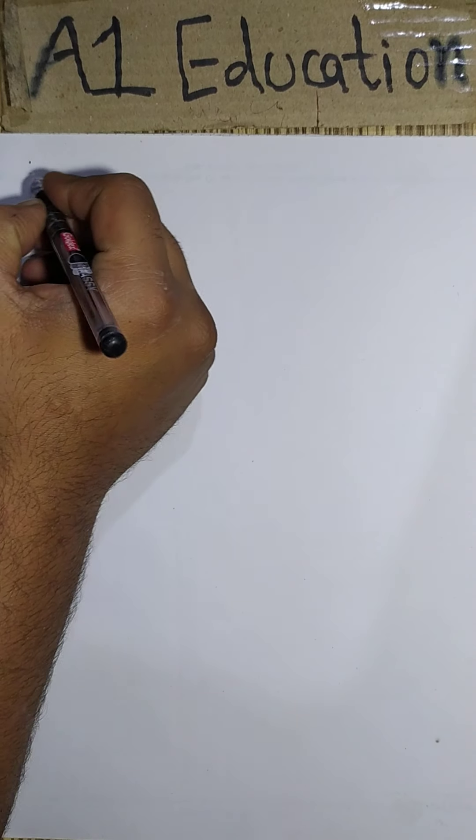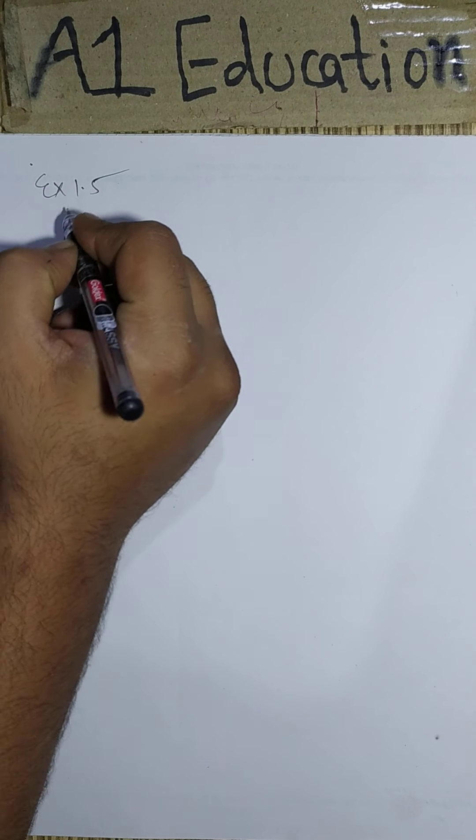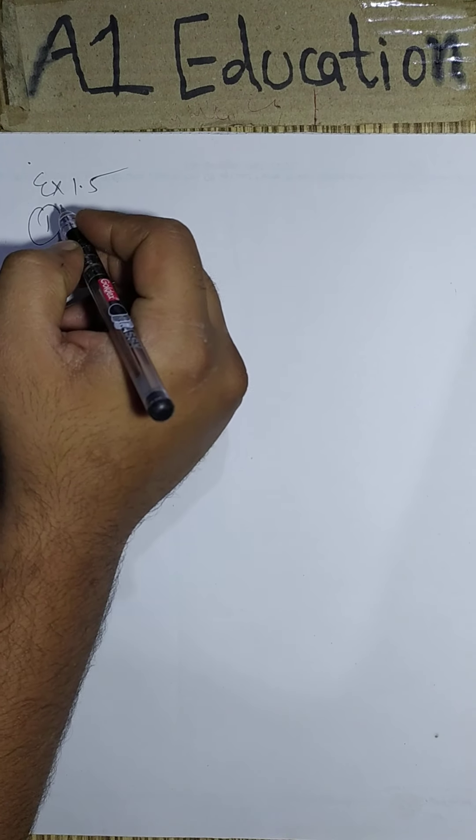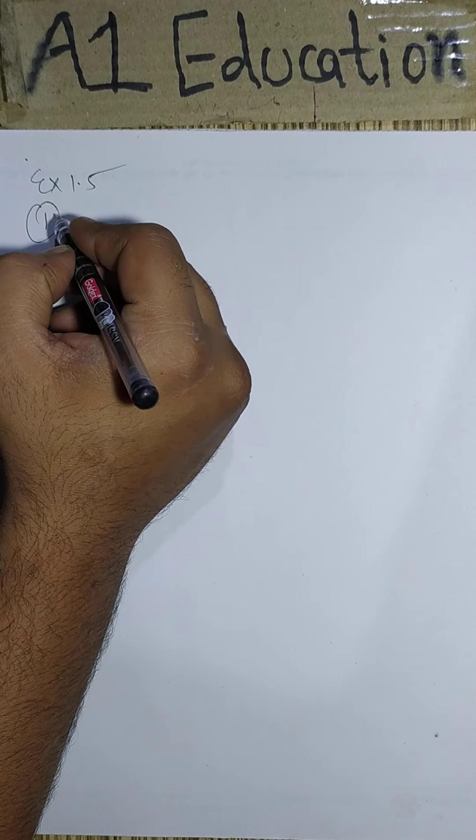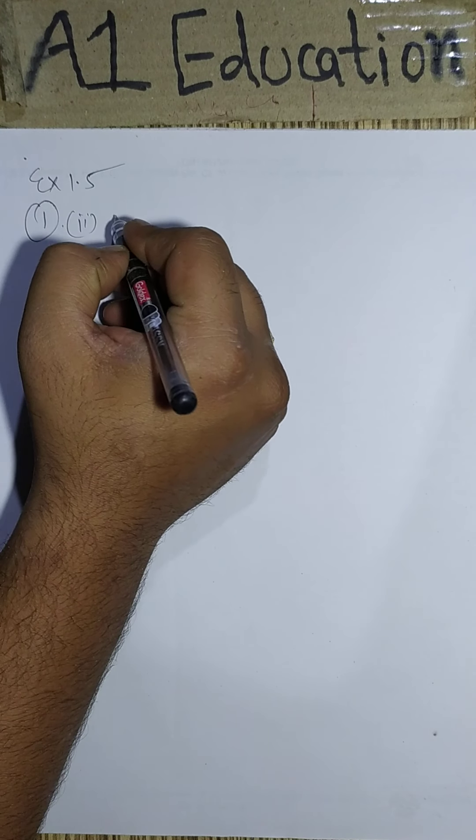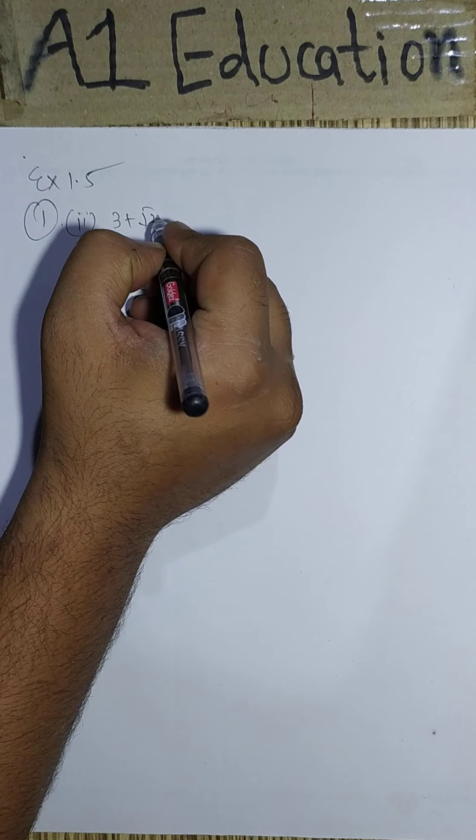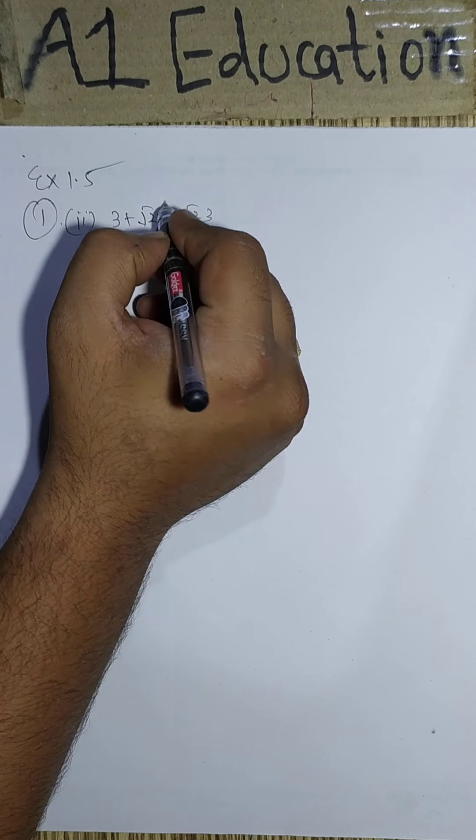Let us solve some questions based on the concept. Exercise 1.5. First question states that identify whether rational or irrational. So let us see whether this number is rational or irrational.